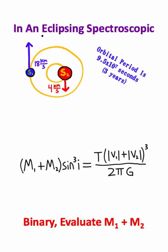The simple thing you can do is recognize that we have an eclipsing spectroscopic binary. Whenever this happens, this sine cubed i is going to go away.